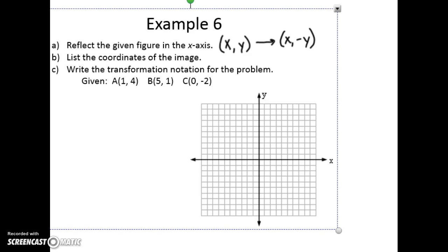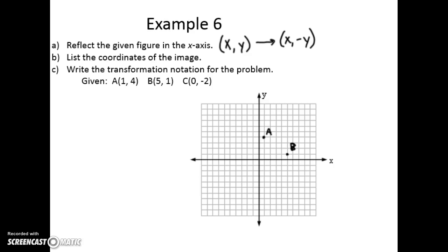So if I have coordinates a, b, and c — a is here, b is at (5, 1), and c is at (0, -2). If I want to reflect over the x-axis, I change the signs of all the y-coordinates. You can also do this by hand by counting: a is a distance of 4 from the x-axis, so I go four more units to get a prime.